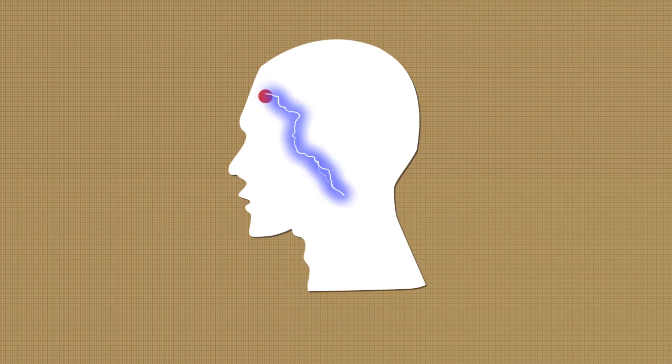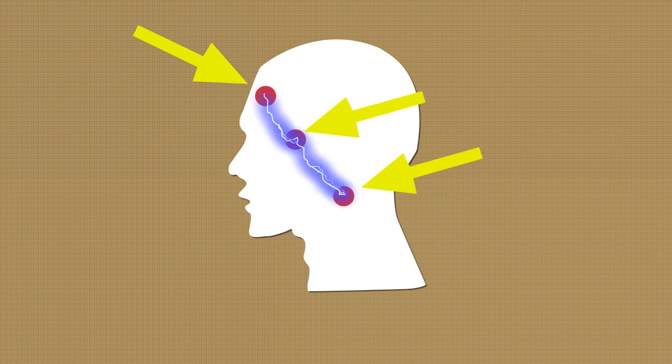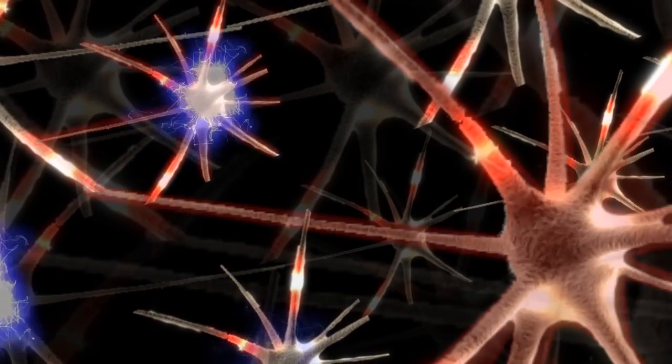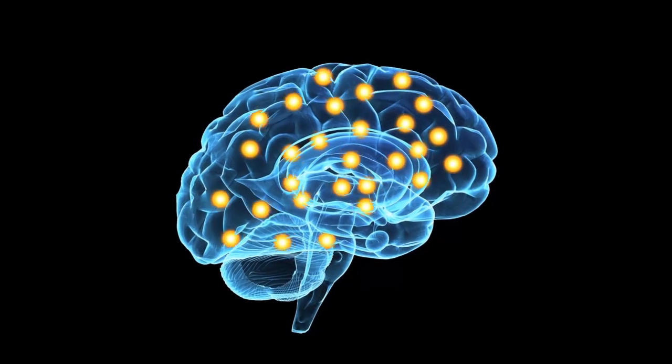The device works by delivering specially formed electrical currents through electrodes placed on the temple and neck of the user wearing it. The electrical currents directly interact with the neural circuitry of the brain and influence its cognitive state.